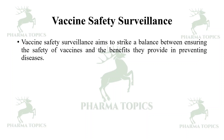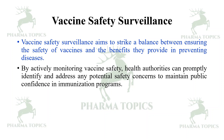Vaccine safety surveillance aims to strike a balance between ensuring the safety of vaccines and the benefits they provide in preventing diseases. By actively monitoring vaccine safety, healthcare authorities can promptly identify and address potential safety concerns to maintain public confidence in vaccination programs. This has been a brief overview of passive surveillance, active surveillance, and vaccine safety surveillance. I hope it will be useful for you. Thank you for listening — happy learning! Kindly share this with your friends and subscribe to our Pharma Topics channel.